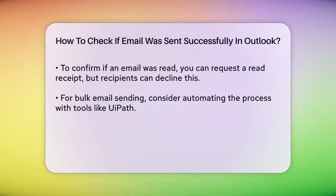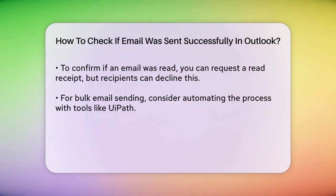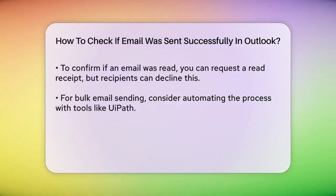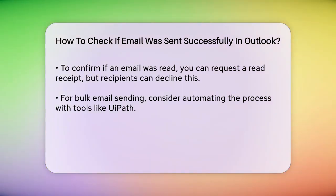If you're sending a large number of emails, manually checking each one can be impractical. In such cases, you can automate the process using tools like UiPath. For example, you can use the Send Outlook Mail Message activity inside a try-catch block to handle any exceptions and ensure the email is resent if it fails to send initially.